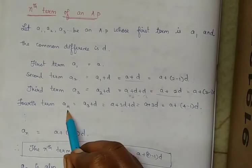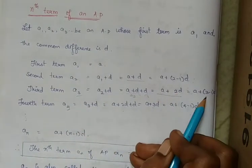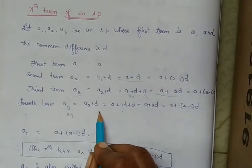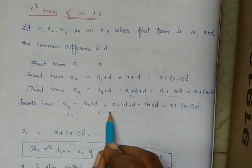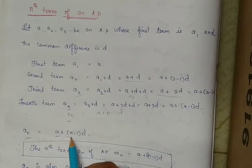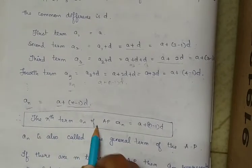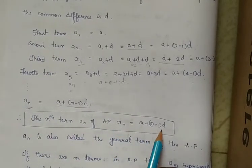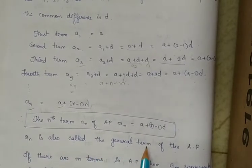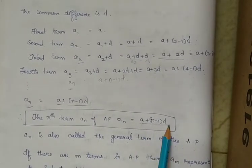See here: if it is 4, then it is (4 minus 1); if it is 3, then (3 minus 1); if it is 2, then (2 minus 1). So if it is N, then it is A plus (N minus 1) into D. If the Nth term is the last term, then AN equals A plus (N minus 1) into D. Therefore, the Nth term of an AP is AN = A + (N−1)D, which is also the general term of the AP.